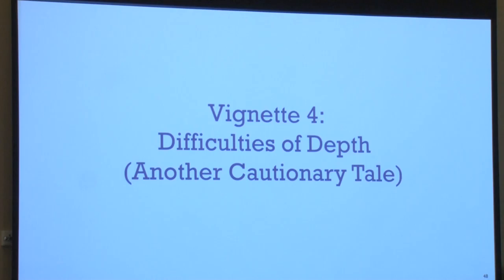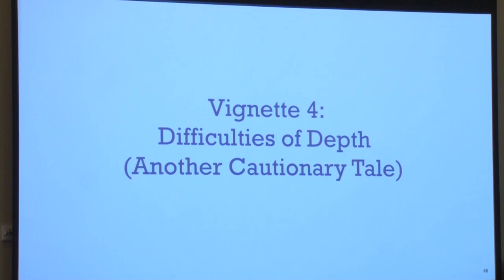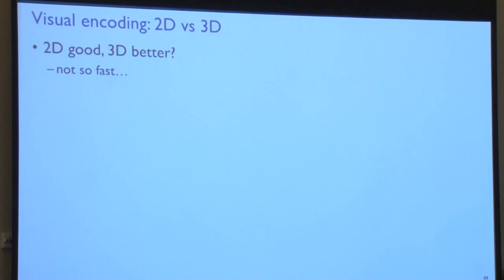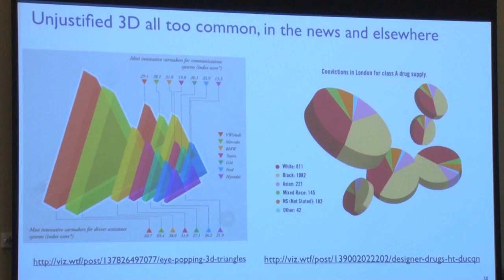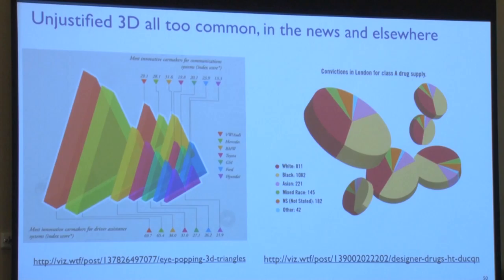Now I'll switch gears to my last vignette: the difficulties of depth. So I've got data with multiple attributes — I could show it in 2D, but wouldn't it just be better to show it in 3D? After all, there's one more dimension and more dimensions equals better, right? Slogans like '2D good, 3D better' should remind you of other slogans — 'four legs good, two legs better' did not turn out so well in Animal Farm. There's a lot of use of 3D that is unjustified, and WTFViz shows us examples you see on the web and in the news quite a bit.